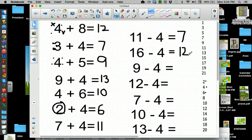We're going to keep going. 9 minus 4, 7, 5. 12 minus 4, 10, 8. 7 minus 4, 5, 3. 10 minus 4, 8, 6. And 13 minus 4 is 11, 9.